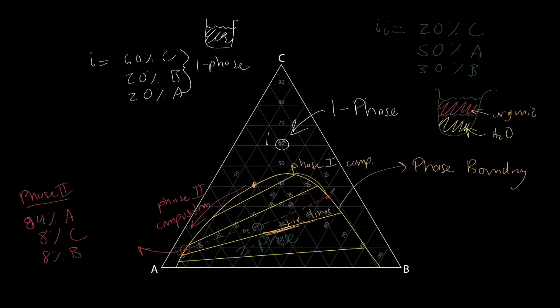And then we would trace this over here to this point here. This would be phase I. And its composition in A would be about 13% A. In B, it would be 90, 80, 70, 60, about 52, 52% B. We add these together, that'll be 65, so that should be 35% C. And let's confirm. And indeed, we are about halfway in between the 30 and 40 lines there. This is how we would read a triangle diagram.